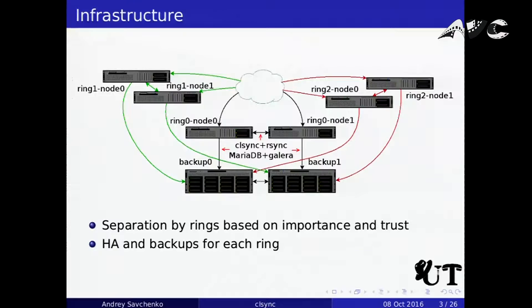This is how our infrastructure looks like. We have multiple nodes, and all of them are combined into several rings. Each ring contains master and slave nodes, which have availability switched one from another, and are backed up.